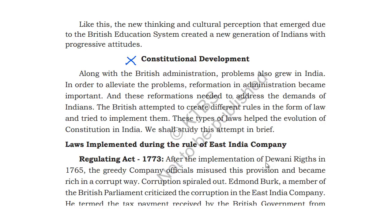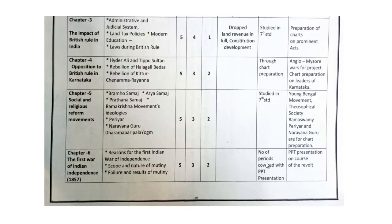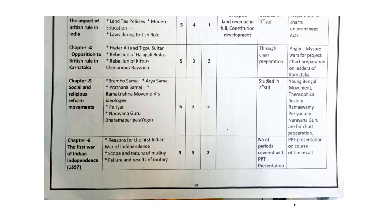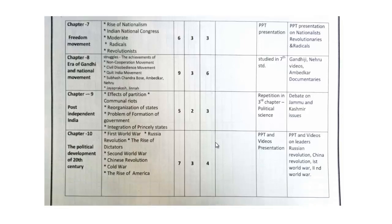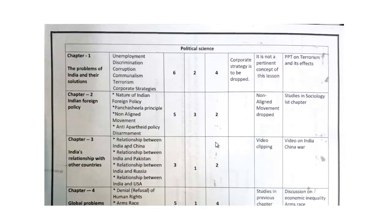For Chapter 4, 'Opposition of British Rule in Karnataka,' nothing has been deleted. Similarly, Chapter 5 on Social and Religious Reform Movements has nothing dropped, and Chapter 6 also has no changes. Chapters 7, 8, 9, and 10 are also remaining the same — most topics are unchanged and you have to focus on everything from those chapters.